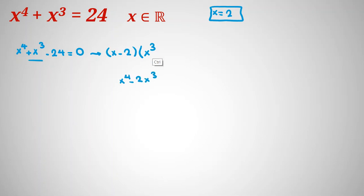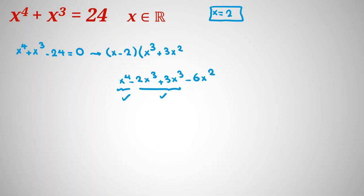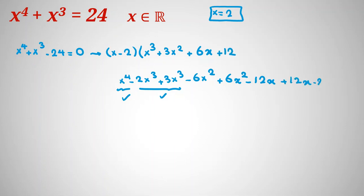To build the factorization, I place x cubed giving x to the 4 minus 2x cubed. Since I need plus x cubed, I place plus 3x squared, giving plus 3x cubed minus 6x squared. Since there is no x squared term, I place plus 6x, giving 6x squared minus 12x. Since there is no x term, I place plus 12, giving 12x minus 24, which matches our equation.